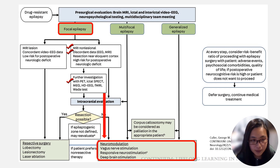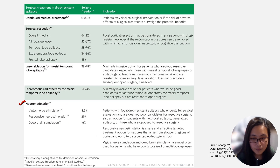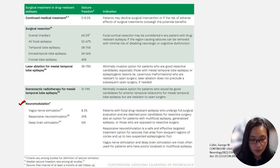Currently, there are three main types of neuromodulation used in epilepsy: VNS, RNS, and DBS. A comparison table of treatments for drug-resistant epilepsy shows that antiseizure medication carries the lowest seizure freedom rate. If an epileptogenic focus is well identified, lesion resection serves as the mainstay treatment due to its higher seizure freedom rate. However, if the patient is not suitable for resection, neuromodulation is another treatment option.